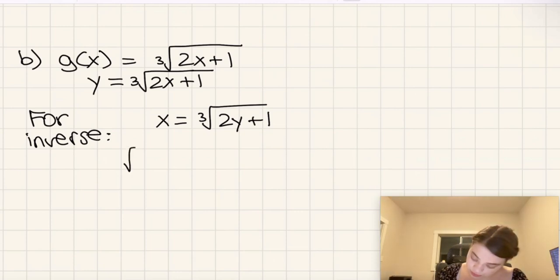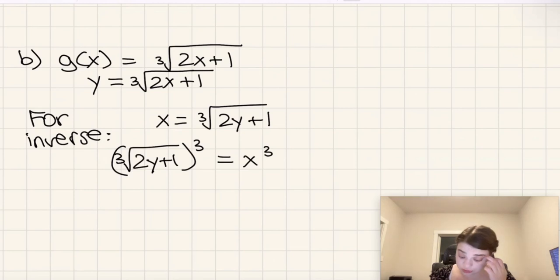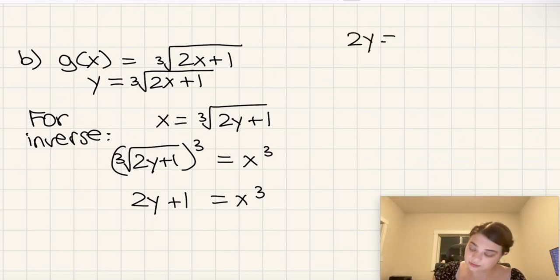And now I'm going to solve for y. So the cube root of 2y plus 1 cubed is equal to x cubed. That means that 2y plus 1 itself is going to be x cubed, because the cube root and cube cancel each other out. So then I'm going to subtract 1 from both sides to get that 2y equals x cubed minus 1. And then I'm going to divide by 2. So we're going to get y equals x cubed over 2 minus 1 half.